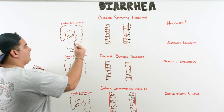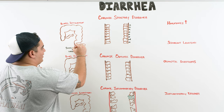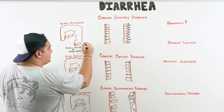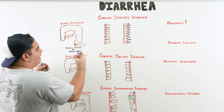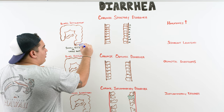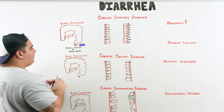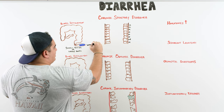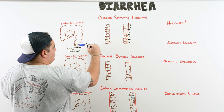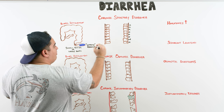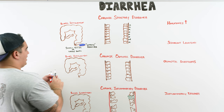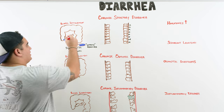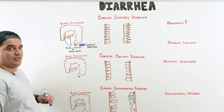For chronic secretory diarrhea, the stool appears watery — not bloody or mucoid. It won't specifically point to small bowel or large bowel; it could be hitting multiple parts of the GI system.